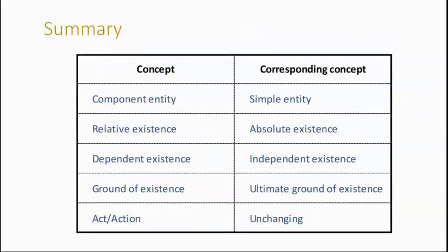But anyway, we've outlined some concepts. Component object and an object that doesn't have components. It's just pure and simple. One thing. Relative existence, absolute existence, dependent existence, and independent existence. Act and maybe something static. And then we've talked about the ultimate ground of existence. So, thank you.